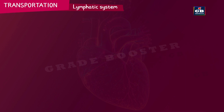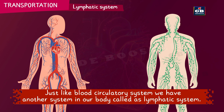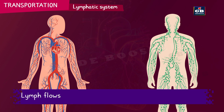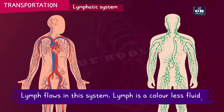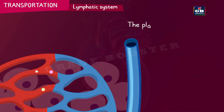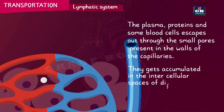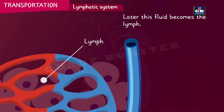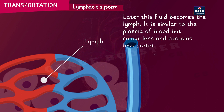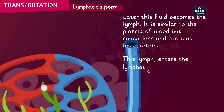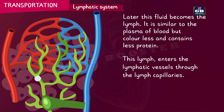The lymphatic system: just like the blood circulatory system, we have another system called the lymphatic system, in which lymph flows. Lymph is a colorless fluid. Plasma, proteins and some blood cells escape through small pores in the walls of capillaries and accumulate in the intercellular spaces of different tissues. This fluid then becomes lymph — it is similar to plasma but colorless and contains less protein. Lymph enters lymphatic vessels through lymph capillaries, and finally these lymph vessels open into the large veins.